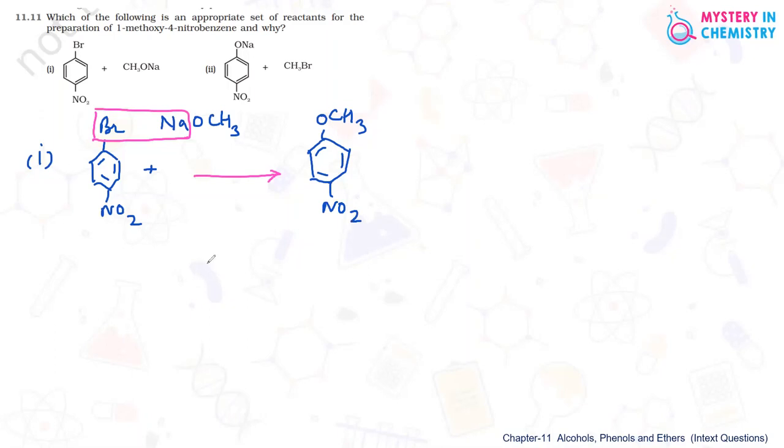In the first case, this compound is formed. And in the second case, same compound is prepared starting from O-Na here with nitro group at para position, and it is reacting with alkyl halide which is methyl bromide.